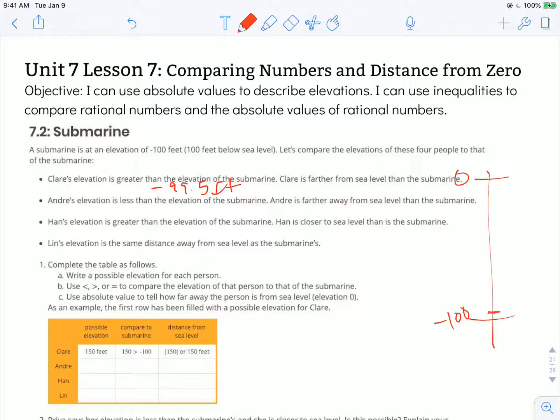It says Claire is farther from sea level than the submarine. So we have to consider how far the submarine is from sea level. It's 100 feet from sea level. So if Claire is going to be higher than the submarine and farther from sea level, she's going to have to be above 100 feet